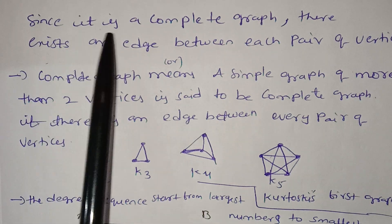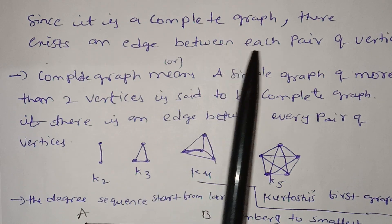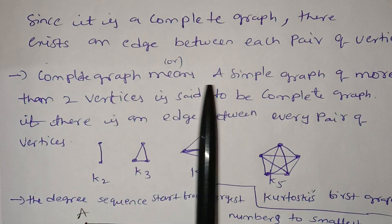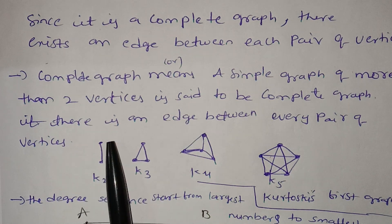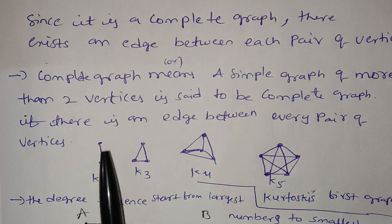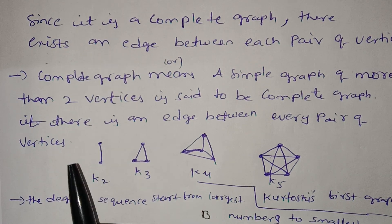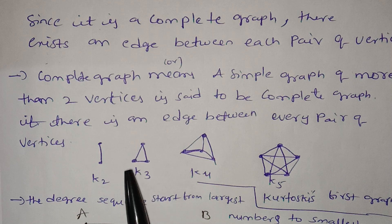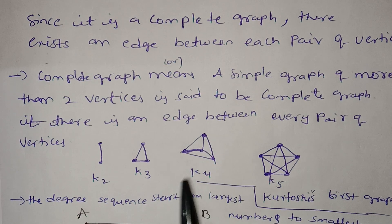Since it is a complete graph, there exists an edge between each pair of vertices. A complete graph is a simple graph where more than two vertices are connected. With two vertices there is one edge. Here we have K4 with vertices 1, 2, 3, 4.